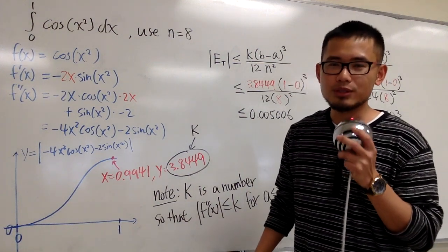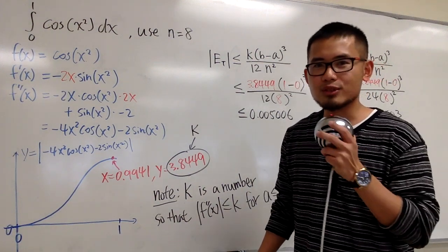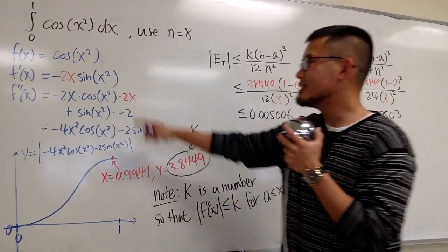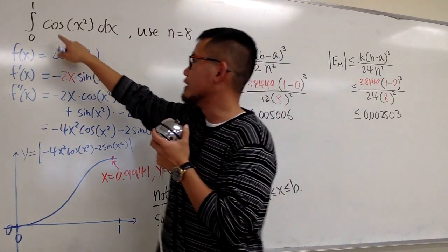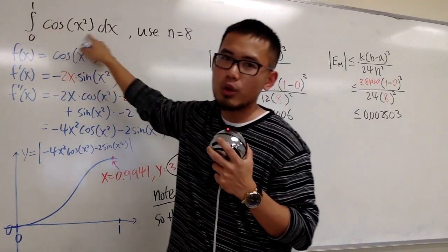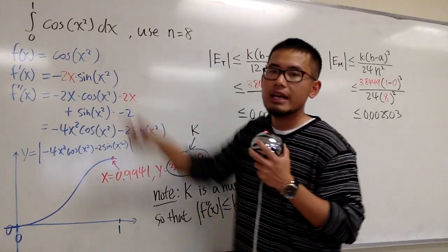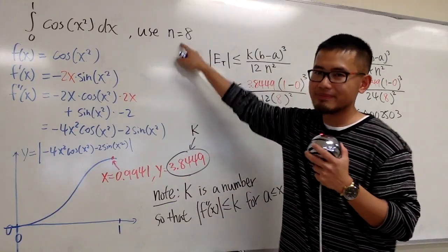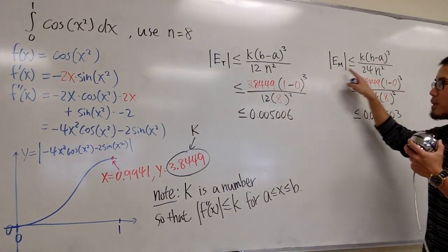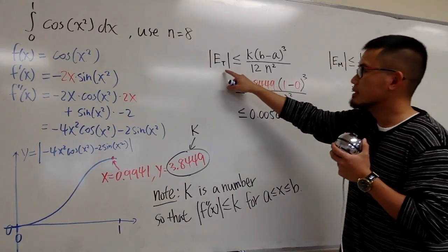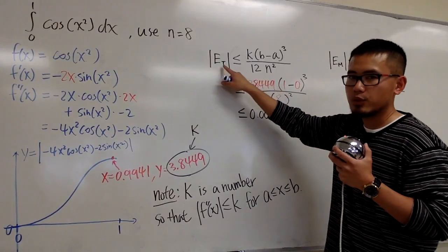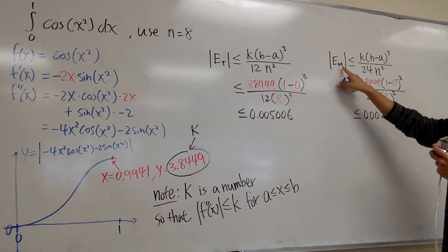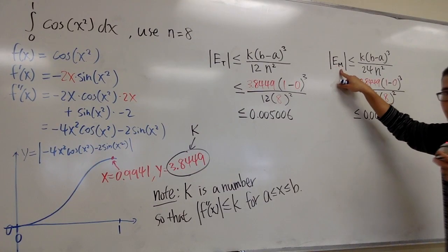How to use the error formulas for the trapezoid and midpoint rules when we are trying to approximate integrals. The integral we are trying to approximate is the integral from 0 to 1 of cosine of x squared dx, using n equal to 8. The error formula for the trapezoid rule is on the board, and this is the error formula for the midpoint rule.